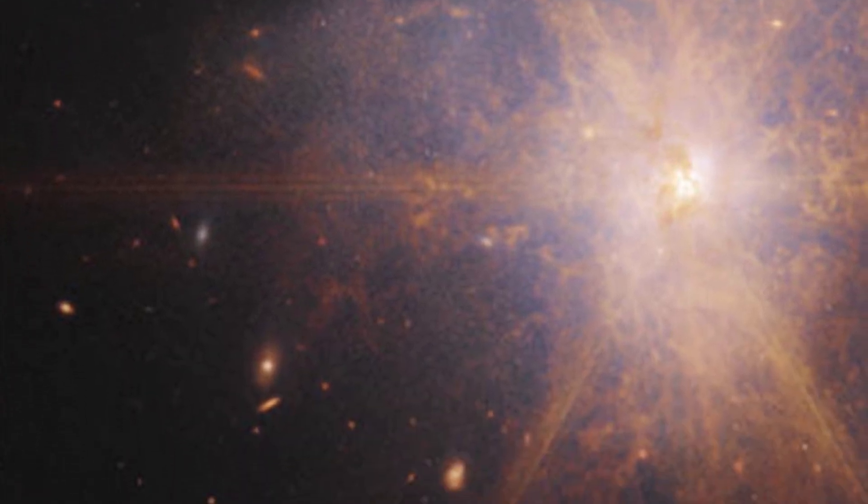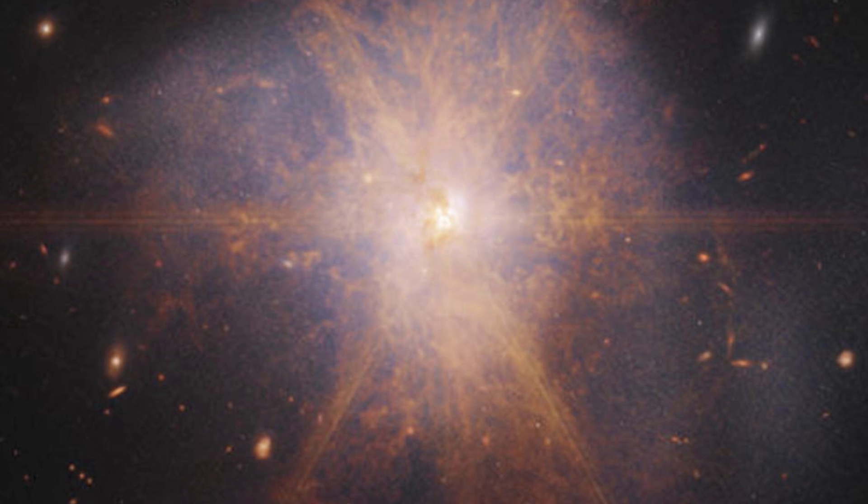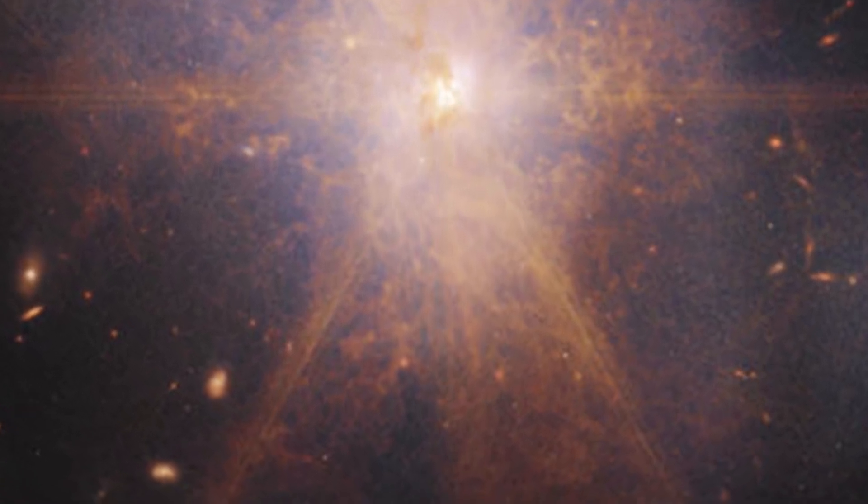The tidal tails indicate the gravitational pull between the two galaxies. Finally, the reddish and orange streams and filaments represent scattered organic materials in ARP-220.